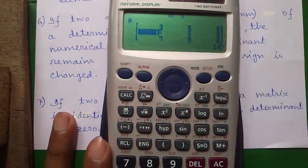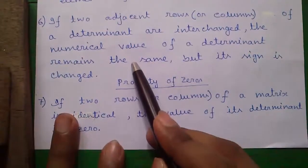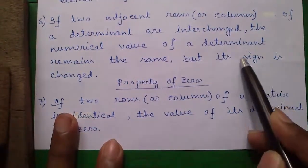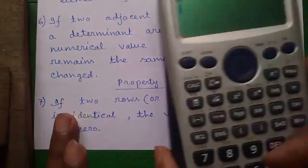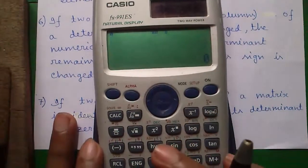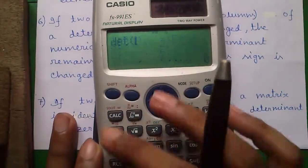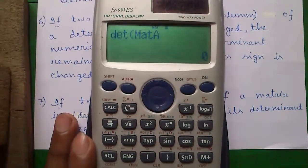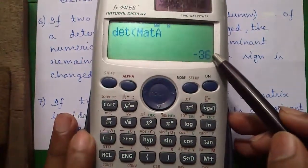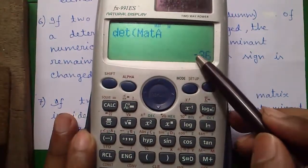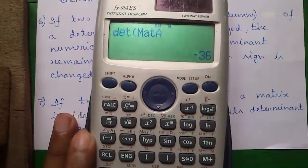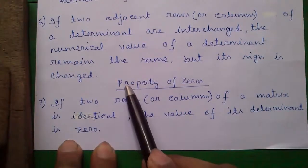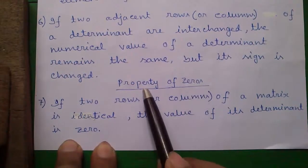So row 2 and row 1 are interchanged. The determinant will remain same but its sign will be changed. So determinant numerical value is same, that is 36, but the sign is changed, that is minus 36.